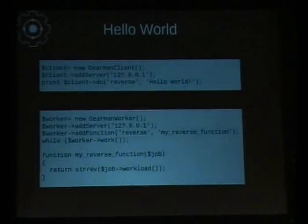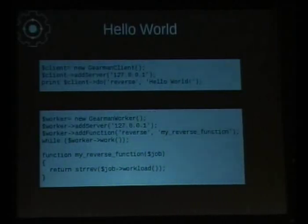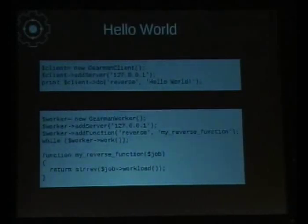On the back end, with the worker, you create pretty much the same setup — create a worker object, add the same set of servers, add a function. This is essentially registering with the job server, saying 'I can do the function reverse.' Then in your basically infinite loop waiting for jobs, when a job comes in it'll be sent to you. Within the worker code, the callback gets called with that job — every time a reverse job is sent down, it picks it up, runs strrev on it, and returns it.